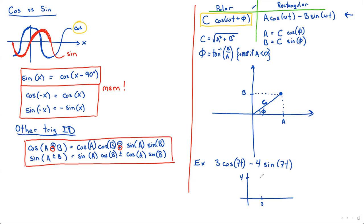By Pythagorean's theorem, this line would be the square root of 9 plus 16, which is the square root of 25, which is 5. And this angle is the inverse tangent of 4 over 3, which is 53 degrees. And so this whole thing is equal to, as an engineer would write it, 5 cosine 70t plus 53 degrees. This is how an engineer would write it.